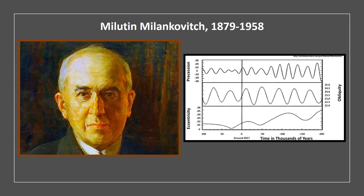The relationship between the Earth's orbital cycles and climate change was proposed by Milutin Milankovic. Milankovic was a Serbian engineer, and during the 1930s he proposed that the changes in the intensity of solar irradiation received on the Earth were affected by three fundamental factors.